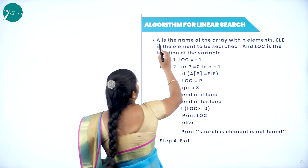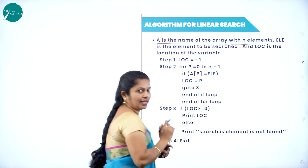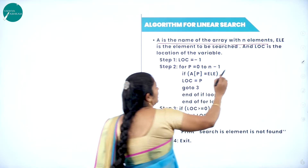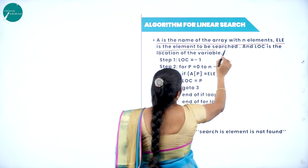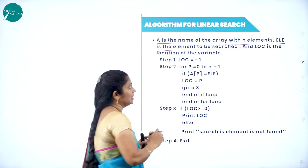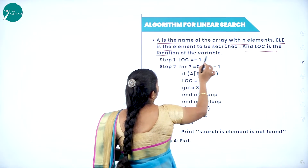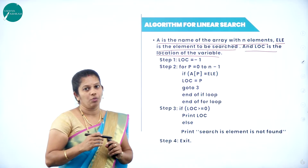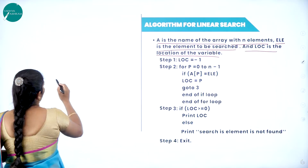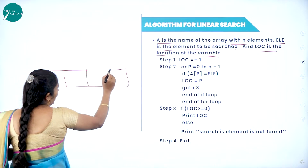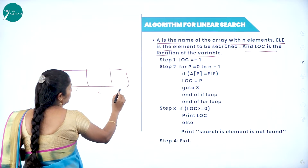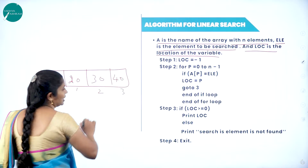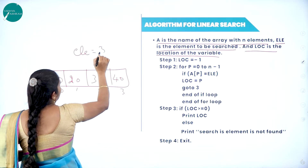In this case, A is the name of the array with N elements. ELE is the element to be searched — which element you are searching, that represents ELE. LOC is the location variable — on which location that element is present. Consider an array with elements 10, 20, 30, and 40 at positions 0, 1, 2, 3. Take the search element ELE = 30.